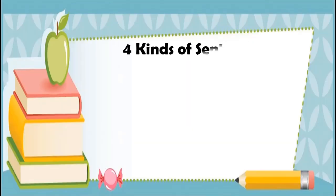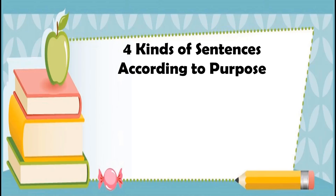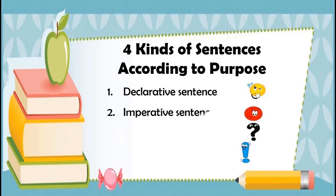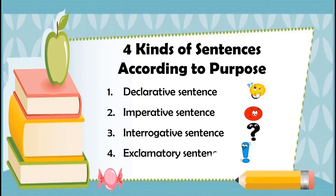So, do you have an idea about the four kinds of sentences according to purpose? They are the declarative sentence, imperative sentence, interrogative sentence, and exclamatory sentence. Watch and listen intently as we discuss each of them. Are you excited for another learning adventure? Well then, let's go!